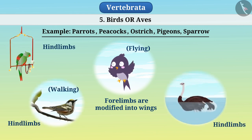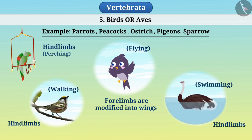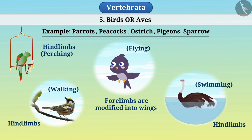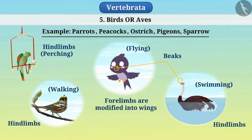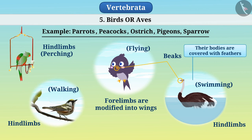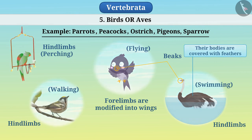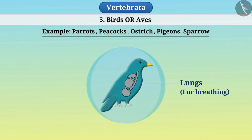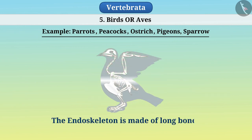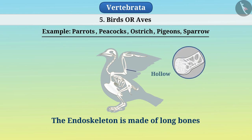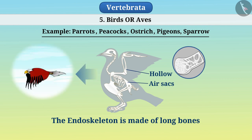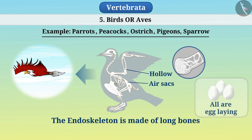Hind limbs are adapted for walking, swimming, or perching. They have beaks and their bodies are covered with feathers. They breathe with the help of lungs. The endoskeleton is made of long bones. The bones are hollow and have air sacs, which helps them reduce their weight and aids in flying. They are all egg-laying animals.